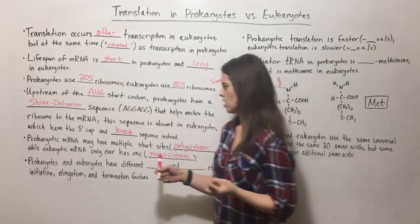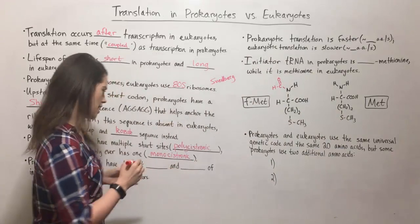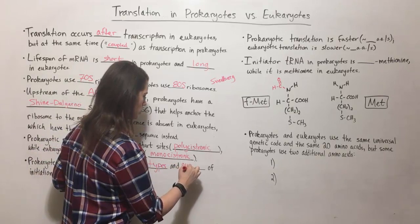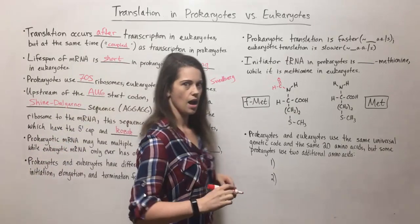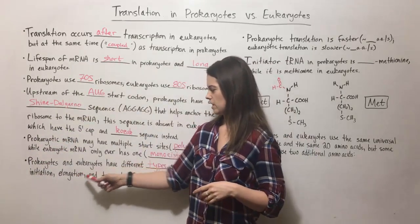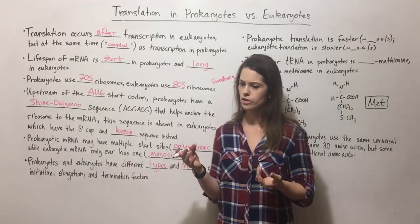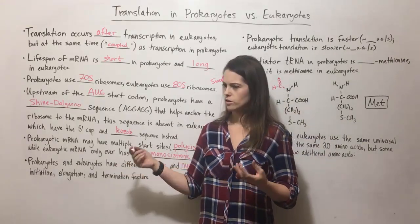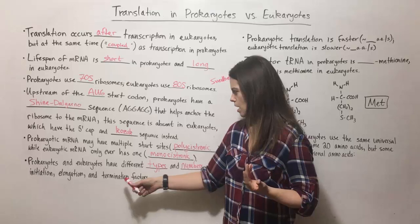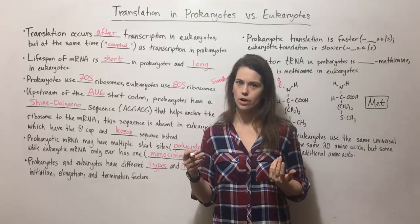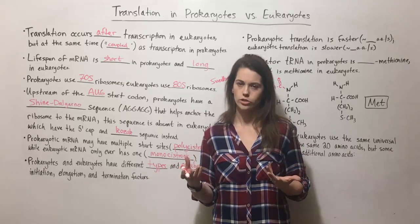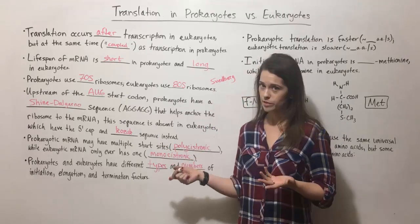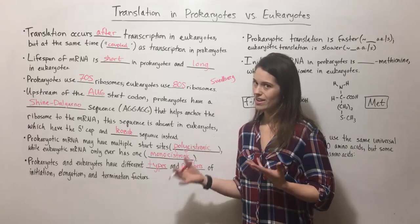Prokaryotes and eukaryotes also have different types and numbers of initiation, elongation, and termination factors. Initiation factors are small proteins that help get translation started. Elongation factors are proteins that make sure it keeps going, and termination factors are proteins that help translation end at the appropriate time. Prokaryotes and eukaryotes have different types and also different numbers of these factors.